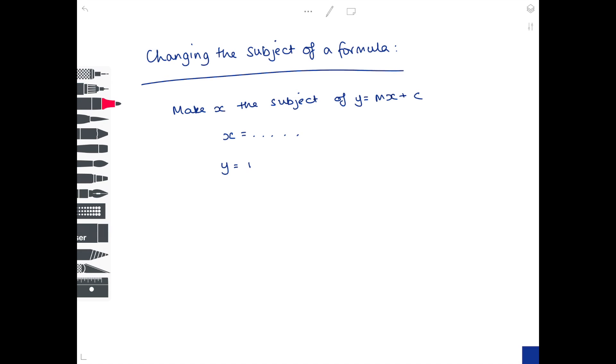So if we have y equals mx plus c to begin with, the crucial thing when you're making a different letter the subject of the formula is you need to get the x value by itself. And the first thing we need to do, therefore, is to get rid of the c, because at the moment we have mx plus c on the right-hand side. So how do we get rid of c? Well,